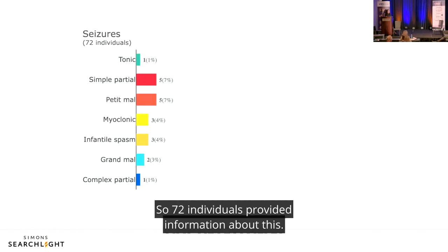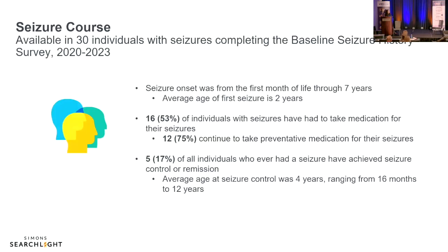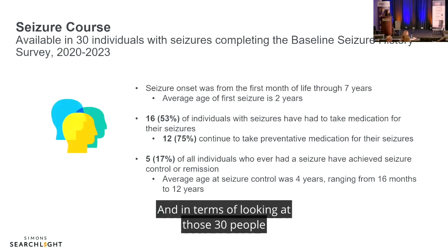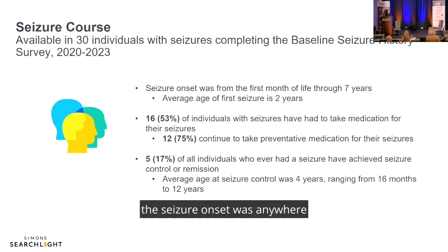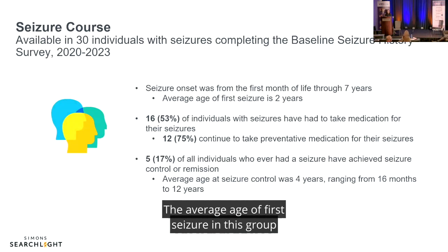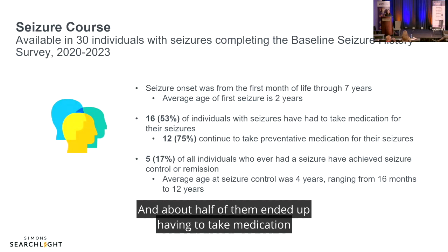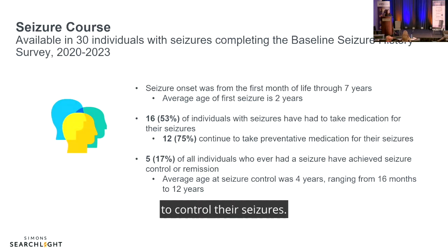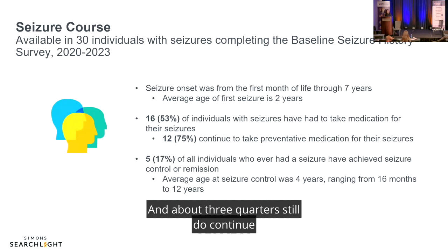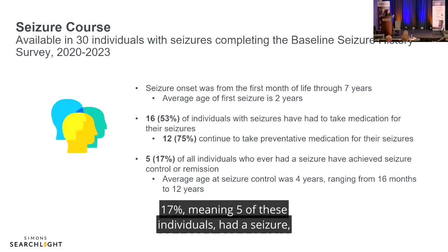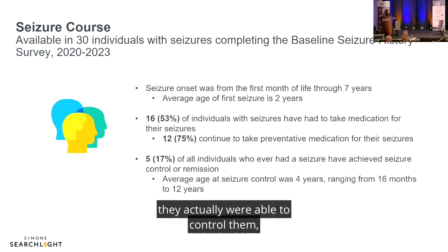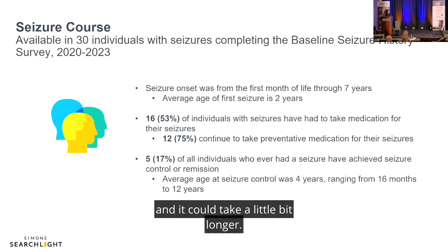Of the 30 individuals who provided seizure information, onset ranged from the first month of life to seven years of age, with an average age of first seizure at two years old. About half ended up taking medication to control their seizures, and about three quarters continue on seizure medication. About 17% — five individuals — were actually able to achieve seizure control, though it took about four years on average to happen.